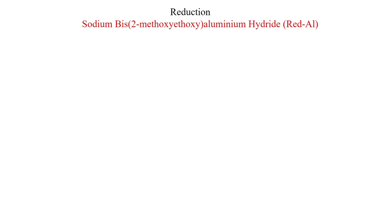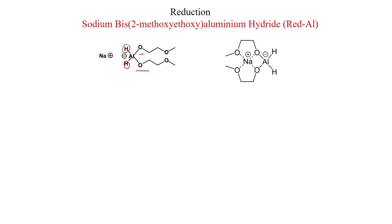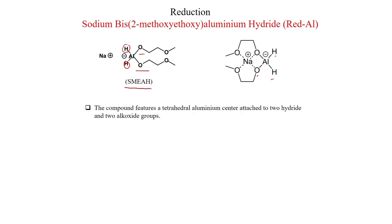First we will discuss Red-Al, which is sodium bis(2-methoxyethoxy)aluminum hydride. The structure has two alkoxy groups connected with aluminum and two hydrides present on the aluminum anion. This is also called SMEAH because S stands for sodium, M for methoxy, E for ethoxy, A for aluminum, and H for hydride.